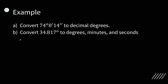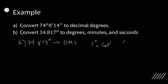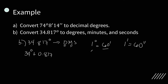So let's have letter B. Convert 34.817 degrees to DMS, that is degree, minute, and seconds. We know that 1 degree is equal to 60 minutes and 1 minute is equal to 60 seconds. So we have 34 degrees plus 0.817. To convert to minutes, we multiply by 60 minutes, so 0.817 times 60 is equal to 49.02 minutes.